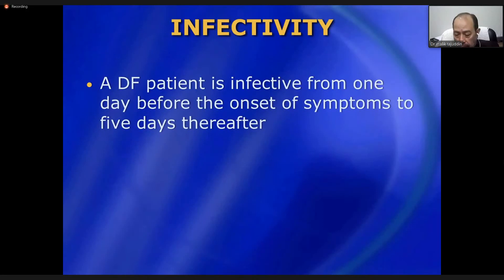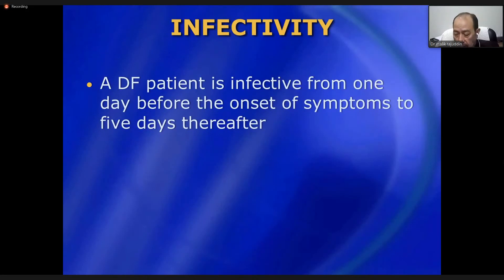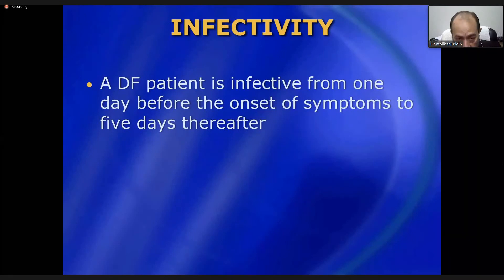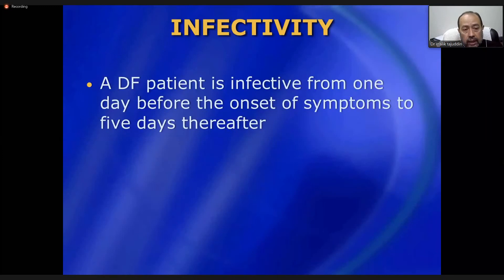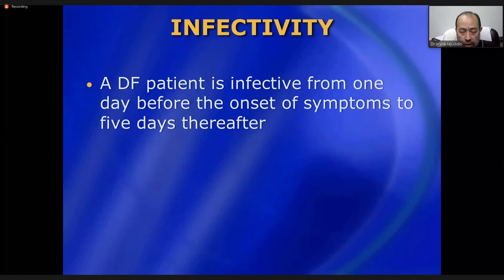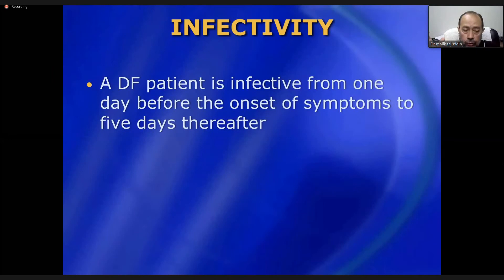A dengue fever patient is infective from one day before the onset of symptoms to five days thereafter. This means you cannot recognize when the patient is spreading the disease before signs and symptoms appear. It is therefore recommended that as soon as dengue is diagnosed or suspected, the patient should be isolated under bed nets so that mosquitoes cannot contact them.